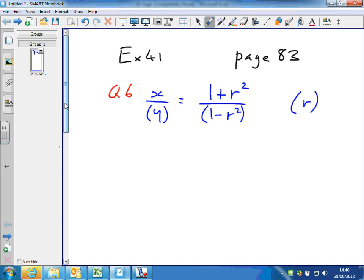So multiplying through by 1 minus r squared, I get x times 1 minus r squared over y equals 1 plus r squared. So that's got rid of the 1 minus r squared on the right.